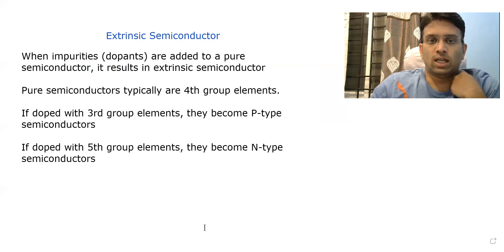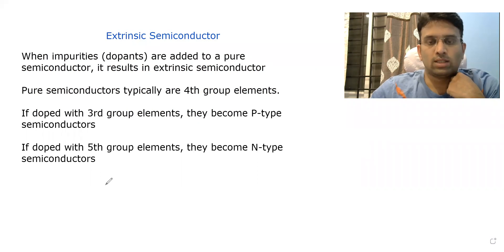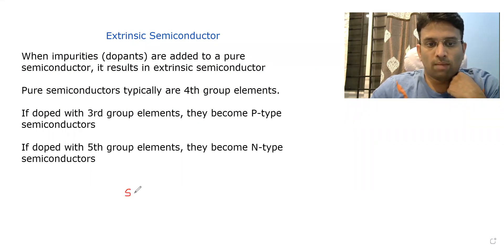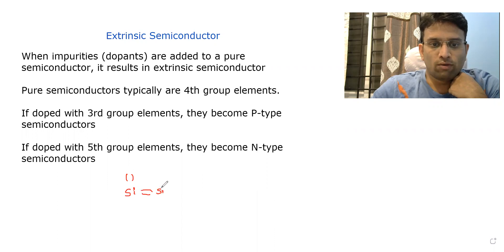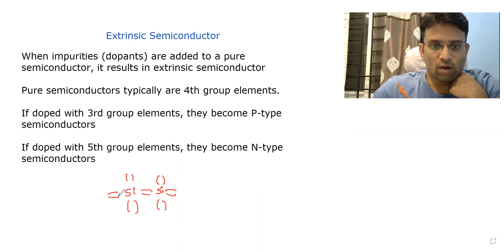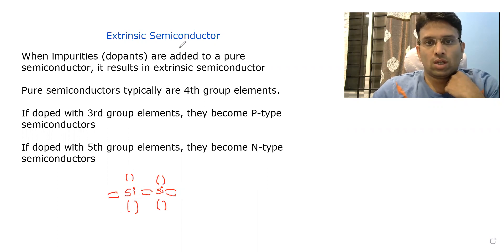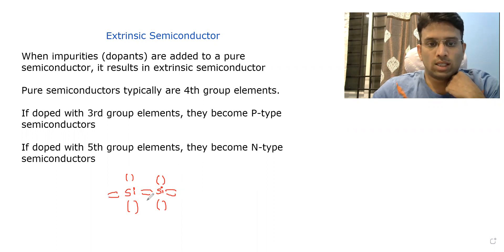Let us consider pure silicon doped with the third group element, that is aluminium. What happens is that you have several silicon atoms which keep forming covalent bonds, like in the typical intrinsic semiconductor. However, suppose the impurity — that is aluminium — sits somewhere here.